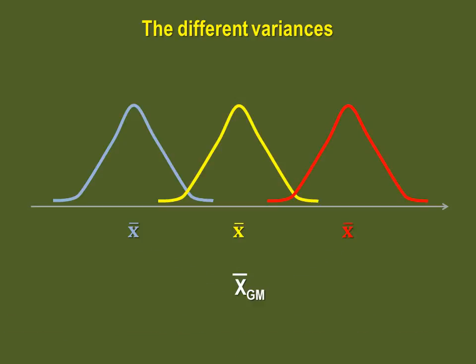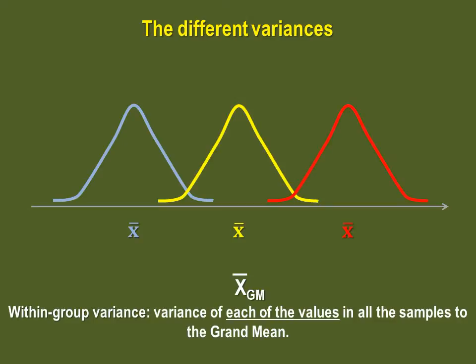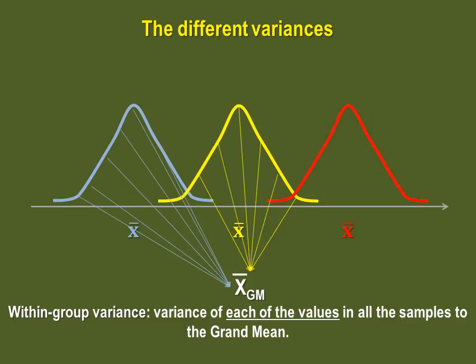The second variance we can see is called the within-group variance. This variance shows how each individual value found in all of the samples vary according to the grand mean. So to calculate this variance, we must take each value in the blue sample, each value in the yellow sample, and each value in the red sample, and check each of these values to the grand mean. This is the symbol for the within-group variance. It's the symbol for the variance, to which we add sub-W for within.